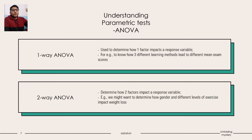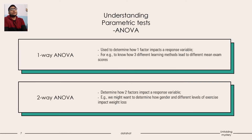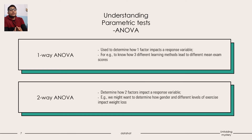Now we come to ANOVA. ANOVA is a comparison-based parametric test. We conduct it when our features are categorical and our response variable is continuous — we compare the difference in means between the various groups of the response variable. When do we use ANOVA versus a T-test? T-tests are applied when we have two groups. Whenever we have more than two groups, we conduct ANOVA. For two groups, we use T-test; for more than two groups, we use ANOVA.